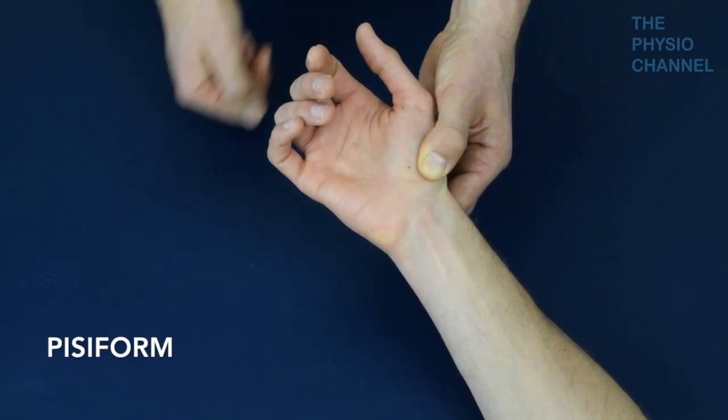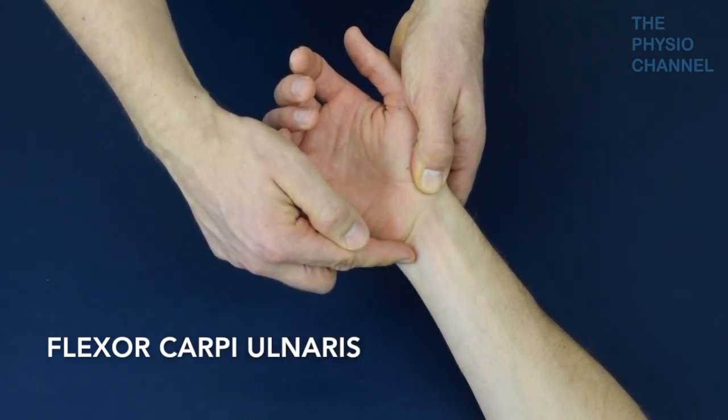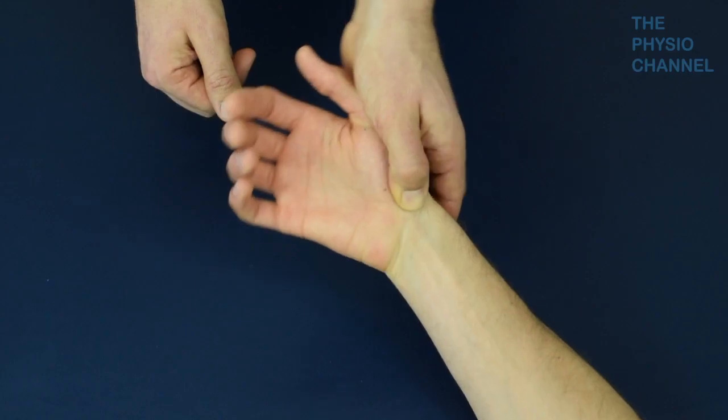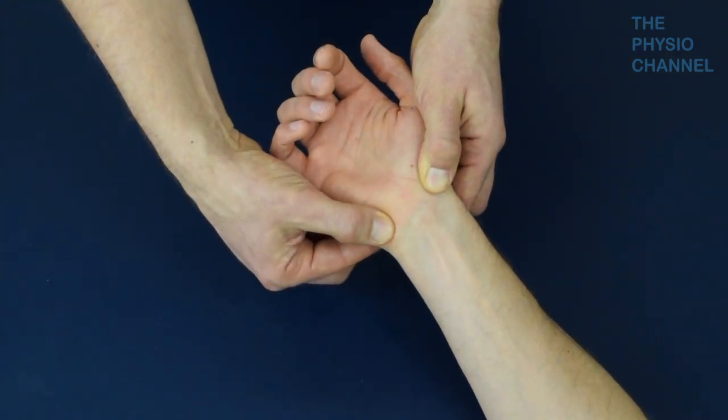The pisiform bone is more prominent on the ulnar side of the palm and the flexor carpi ulnaris tendon is connected to this bone. So if you flex and ulnar deviate the wrist you can follow the tendon to the pisiform bone.